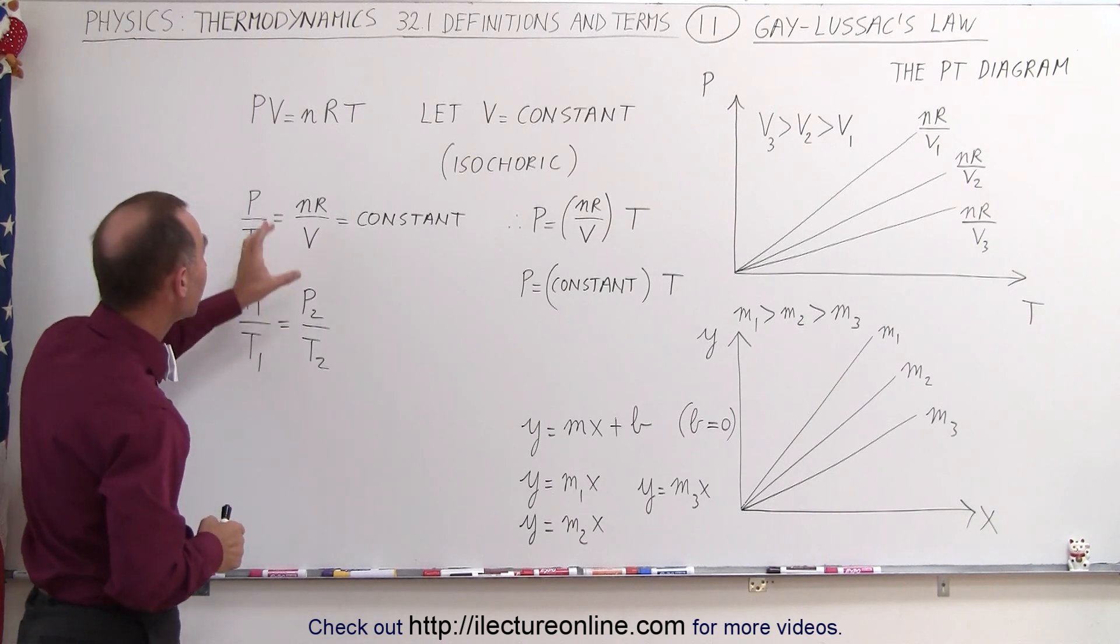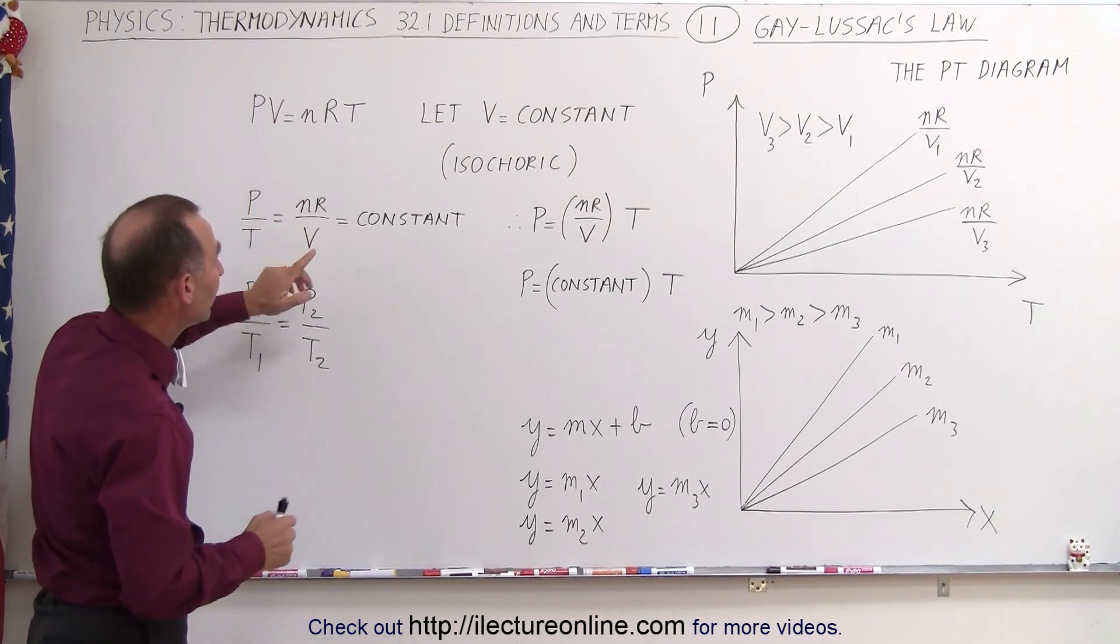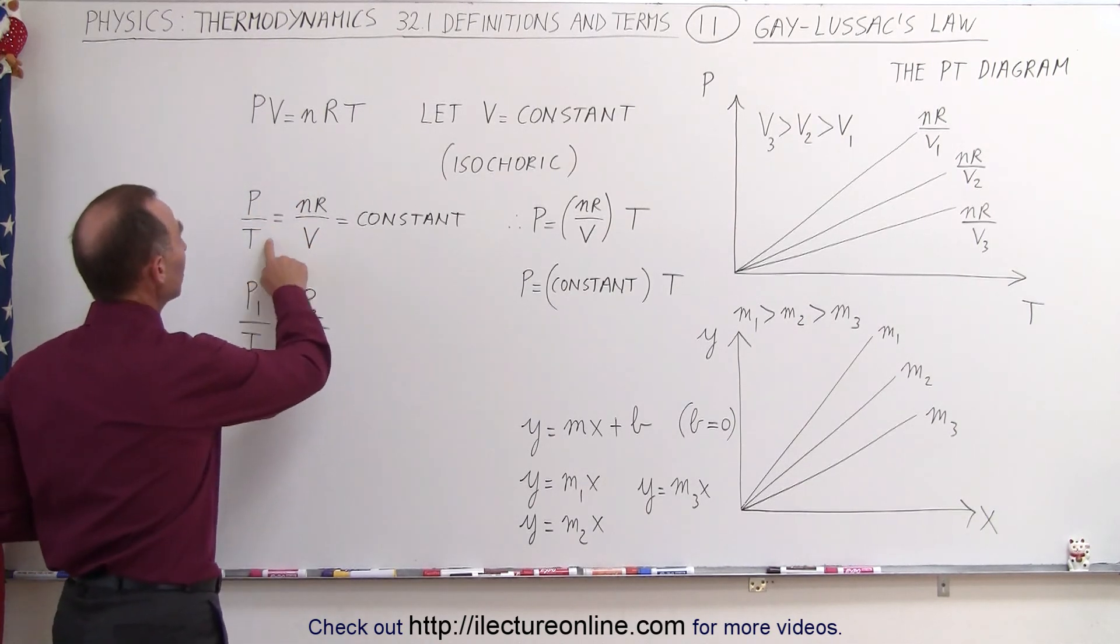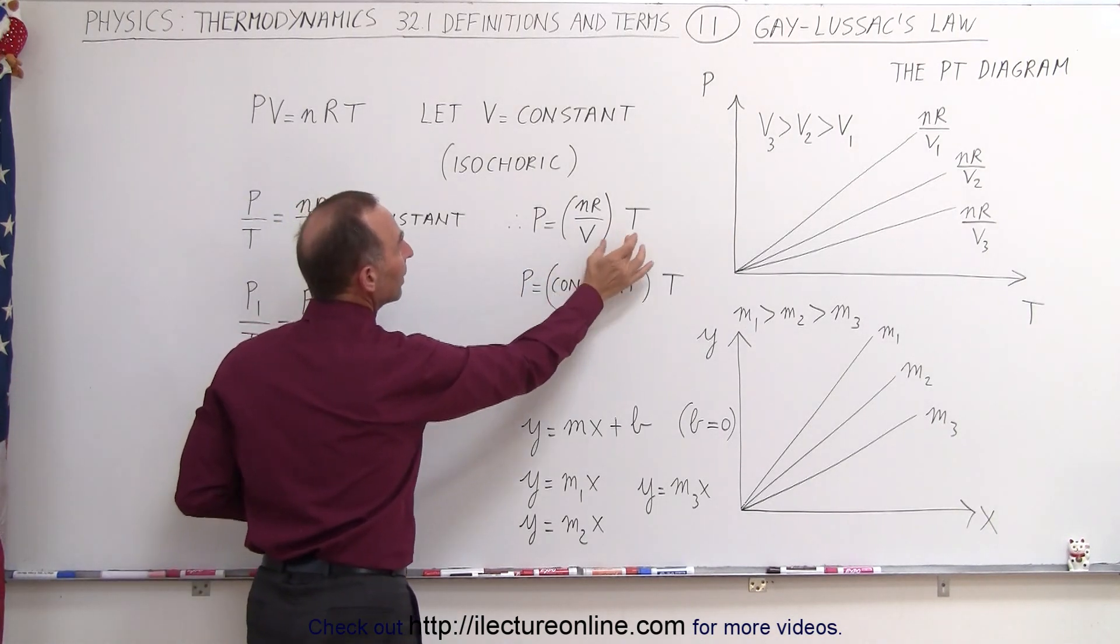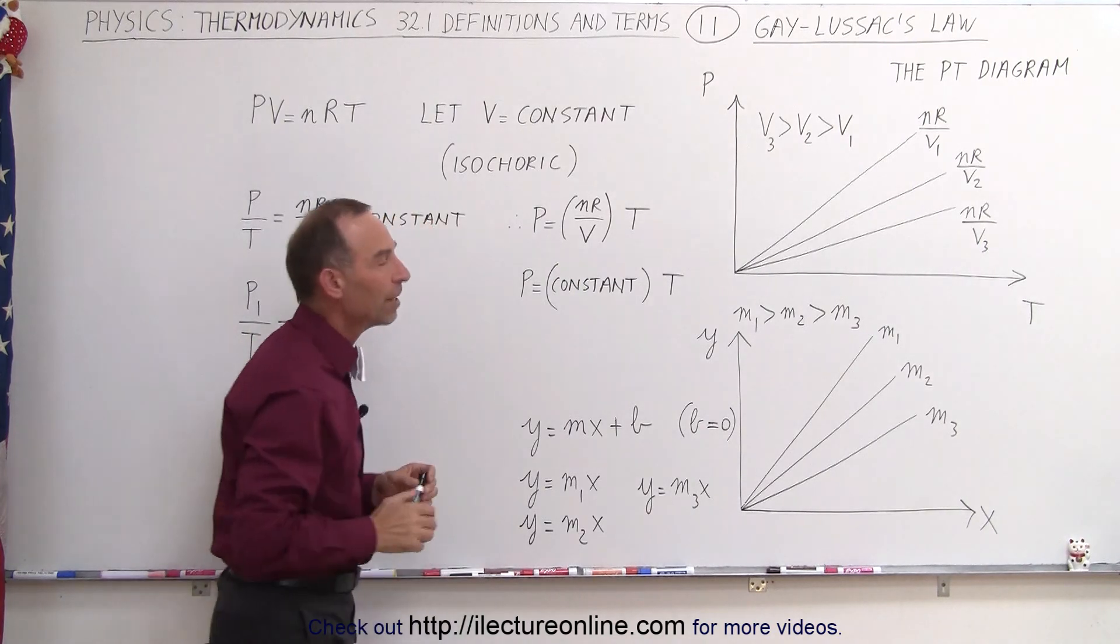Now, if we think of this nR over V as being a constant, and we can put T over here, we can then write that P is equal to this constant quantity times T, or P equals a constant times T.